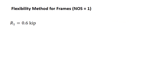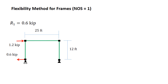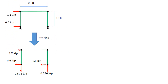R1 equals 0.6 kips means that on our primary structure, we have the 1.2 kip applied load at the top and a horizontal load of 0.6 kips at the lower left-hand roller. For the actual real structure, that means we've computed the horizontal reaction at that lower left-hand pin. We then use statics to find the remaining reactions — you can confirm that the 0.6 kip horizontal force at the right-hand roller and the vertical couple of 0.576 kips is indeed what the calculations yield.